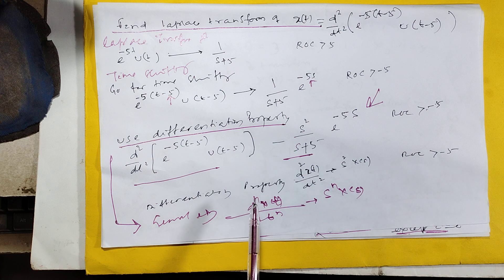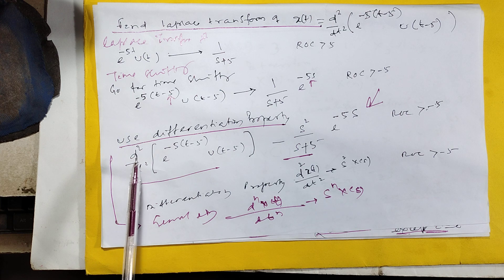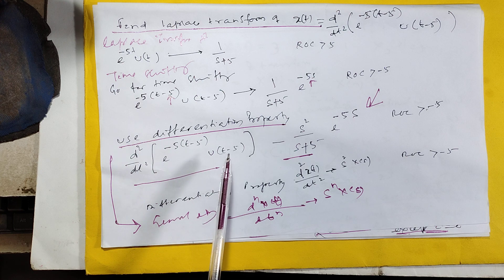In general property, d^n x(t)/dt^n equals s^n X(s). In this case, d²/dt²[e^(-5(t-5))·u(t-5)].